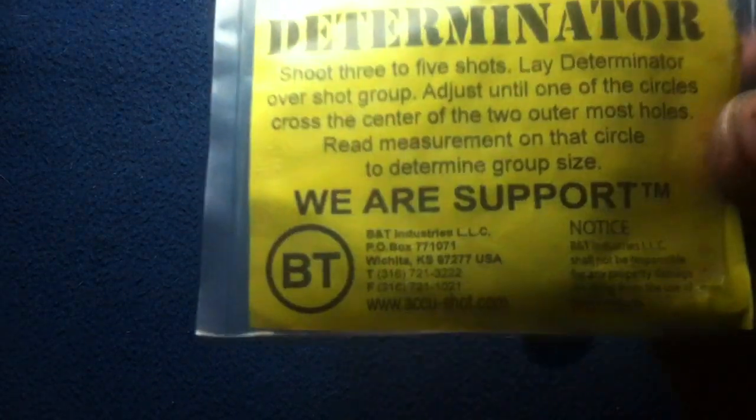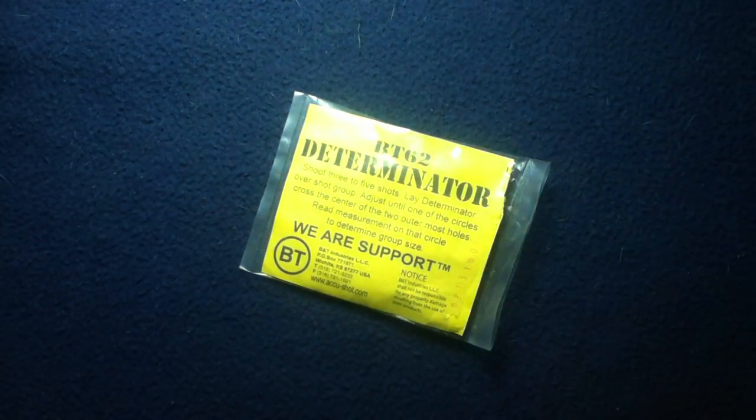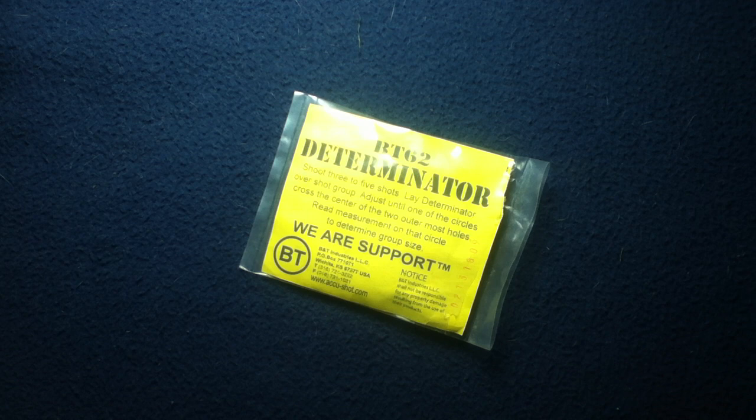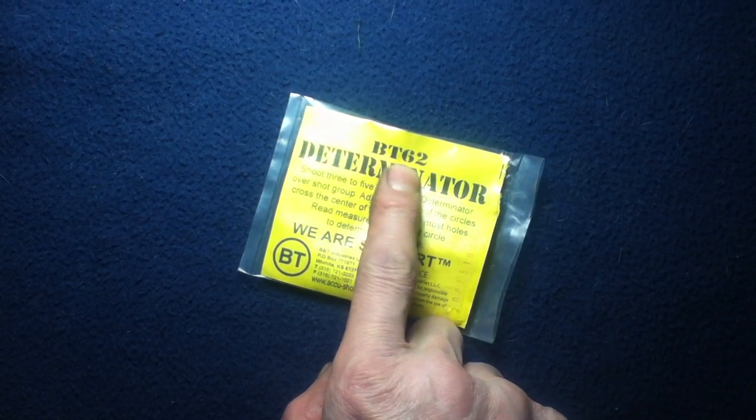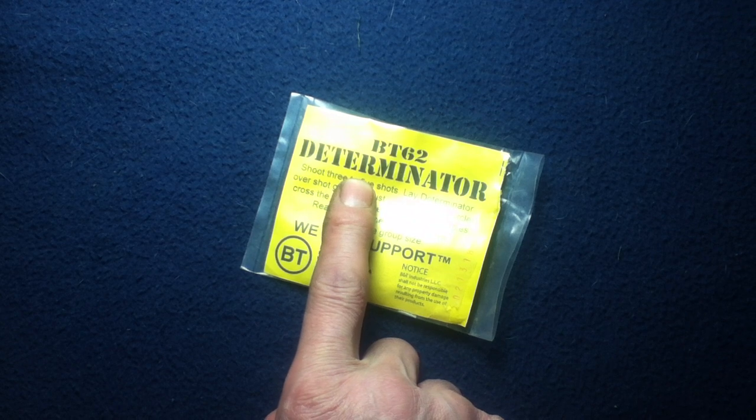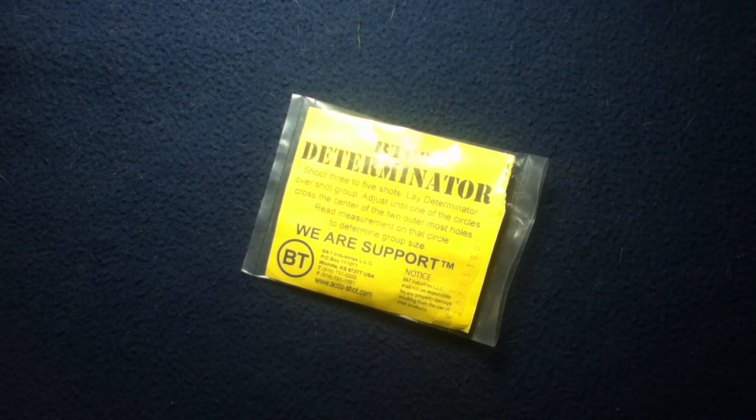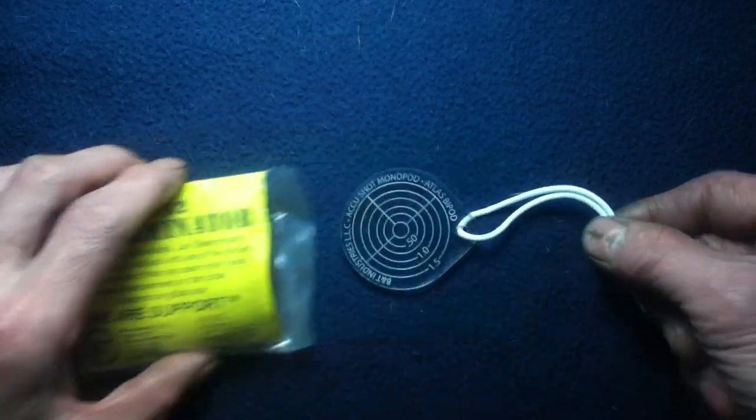And they're also more known for AccuShot, the monopods, as well as the Atlas bipods. So that's what B&T Industries is more known for. But today we're looking at something that they issued as BT62. This package is called the Terminator, but now it's also called the Groupie. And we'll get into why in a second.